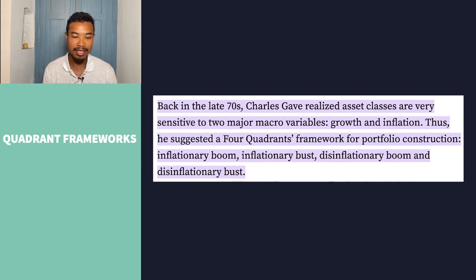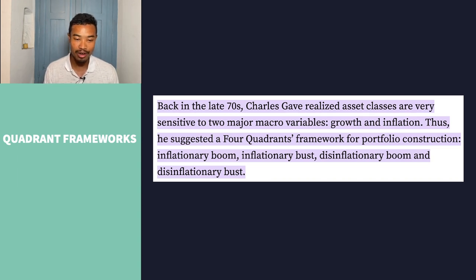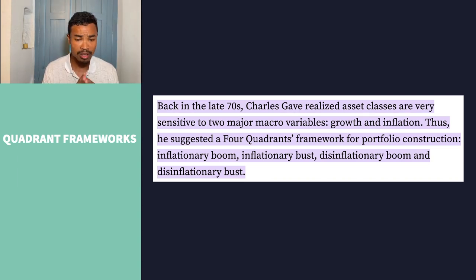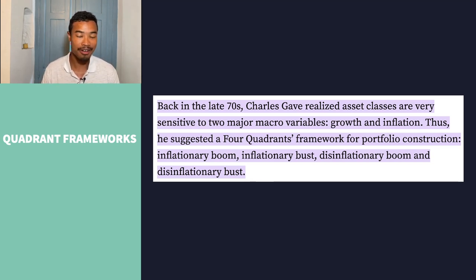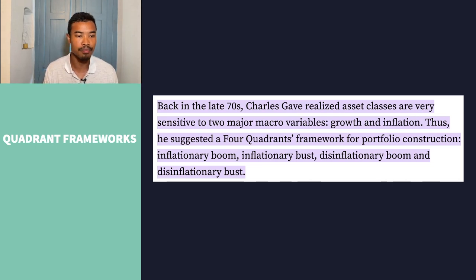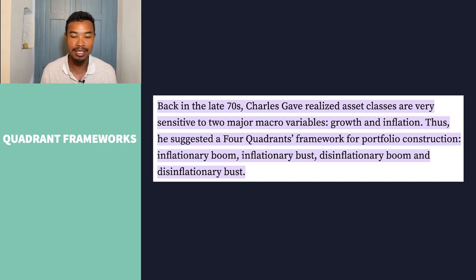The Four Quadrants Framework was popularized and developed by Charles Gave, the founder of GaveKal Research. He's a well-renowned economist who developed this all the way back in the 70s. Charles Gave realized that asset classes moved on two major macro variables — growth and inflation — which are very much at the forefront of discussion right now.